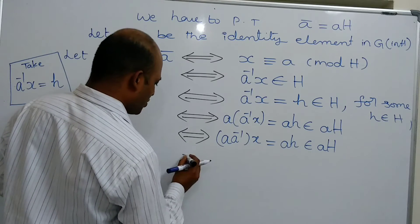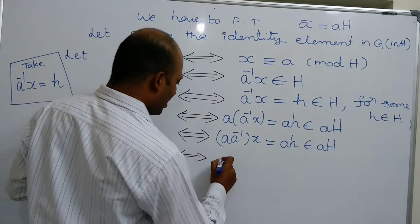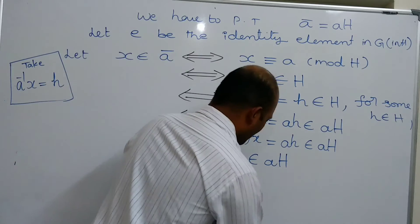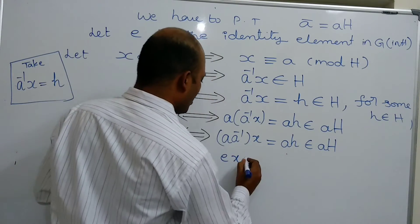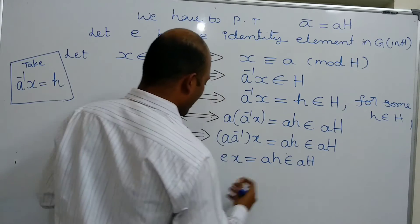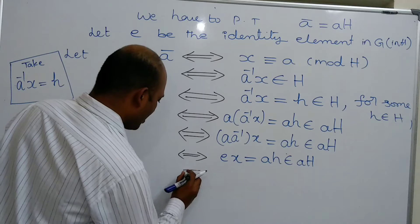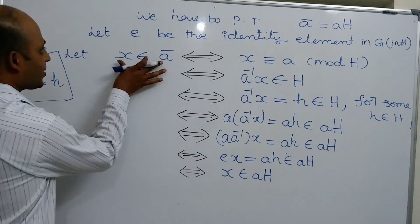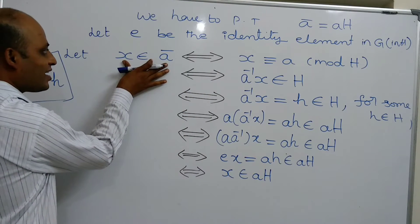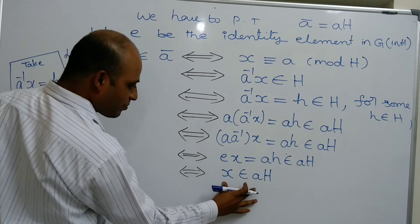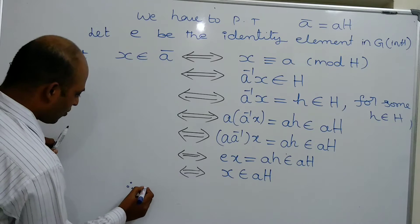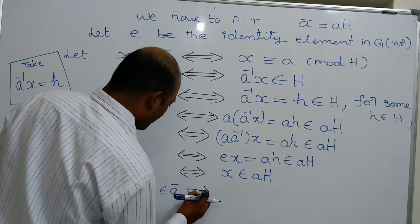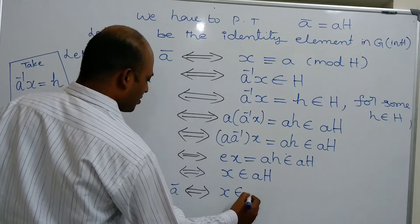This implies and is implied by ex belongs to aH, which means x belongs to aH. So we have shown that x belongs to a bar if and only if x belongs to aH, with the implies-and-implied-by condition holding throughout.